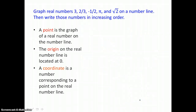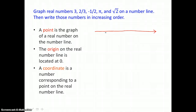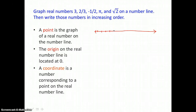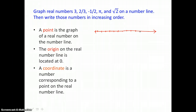In this first example, we want to graph real numbers — three, two-thirds, negative one-half, pi, and the square root of two — on a number line, then write those numbers in increasing order. Every real number can be found on a real number line. Our real number line has arrows at both ends, indicating it goes on forever in both directions. It has equally spaced units, and we label those units with our integers.